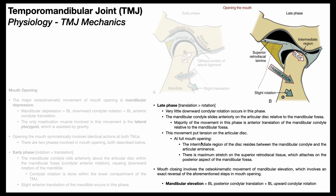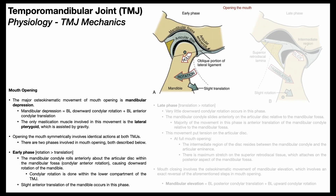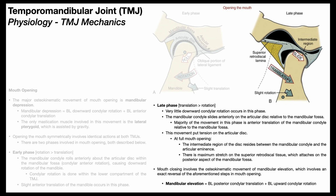At full mouth opening — end range of mandibular depression — you have maximum tension on the articular disc, and two things occur. Number one, the intermediate region of the disc is going to reside between the mandibular condyle and the bony protrusion called the articular tubercle or articular eminence. Second, at full mouth opening we're putting maximum stretch on the superior retrodiscal tissue, which is the posterior-most aspect of the disc, and it attaches on the posterior aspect of the TMJ joint cavity as well as the posterior aspect of the mandibular fossa. So the bottom line is that the early phase of mouth opening involves mostly downward mandibular rotation, whereas the late phase mainly involves anterior mandibular translation with a little bit of inferior translation as well.